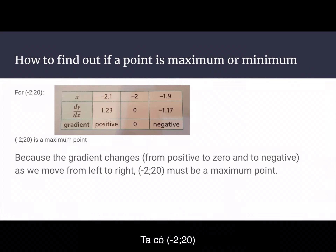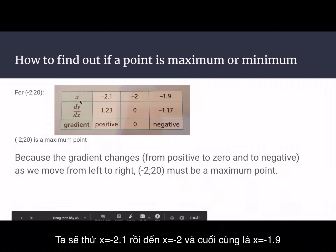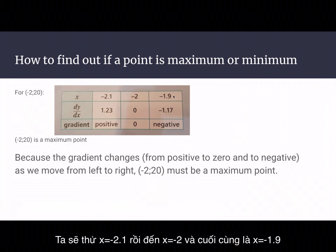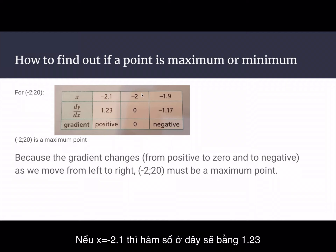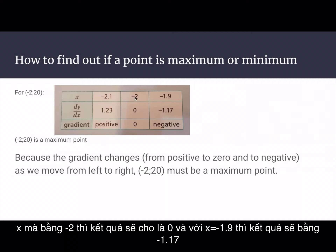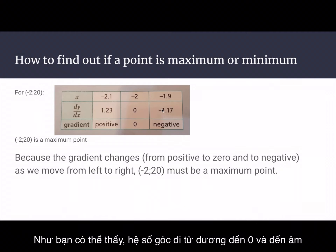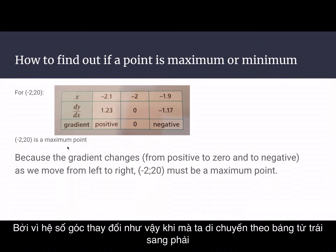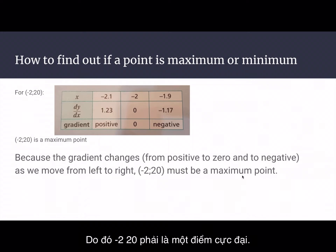For the point (-2, 20), we test x equals minus 2.1, x equals minus 2, and x equals minus 1.9. The gradient values are 1.33, then 0, then minus 1.17. Since the gradient changes from positive to zero to negative as we move from left to right, minus 2 must be a maximum point.